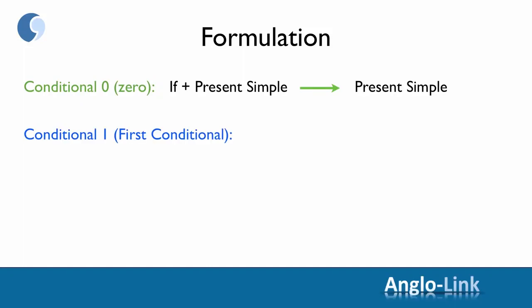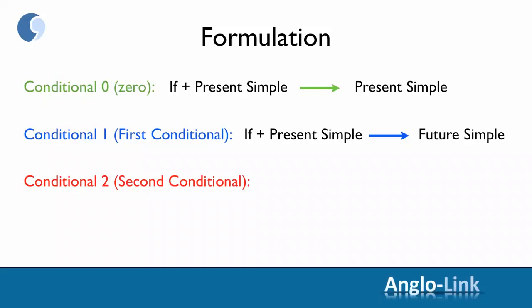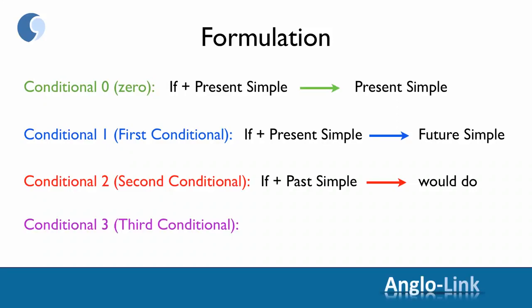Then there is conditional one, the first conditional. We use the present simple in the if clause and the future simple in the consequence clause. Moving on to conditional two, or second conditional, where we use the past simple in the if clause and 'would do' in the consequence clause. And finally, we have conditional three, or the third conditional, where we use the past perfect in the if clause and the consequence clause is formulated with 'would have done'.